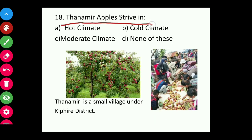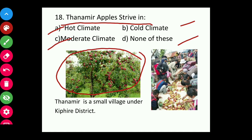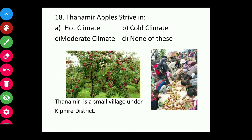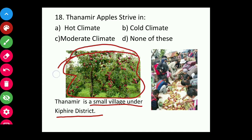Question eighteen: The Amarnath apple thrives in hot, cold, moderate, or no specific climate? Apples are mostly grown in cold climate areas like Jammu & Kashmir and Himachal Pradesh. The answer is cold climate. Tanamir apple is from a small village under Kifiri district, Nagaland, and is a very popular apple produced in Kifiri district.